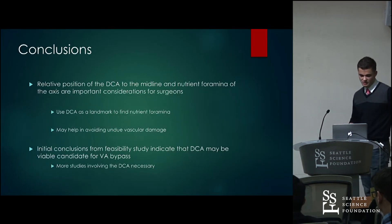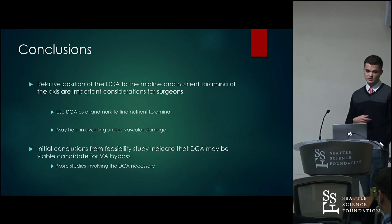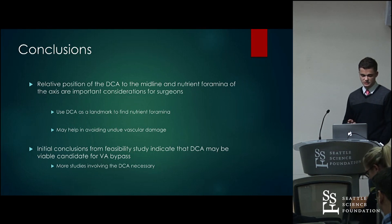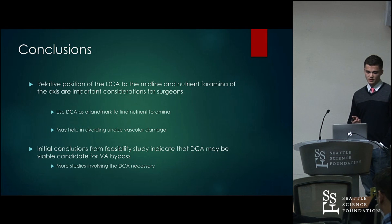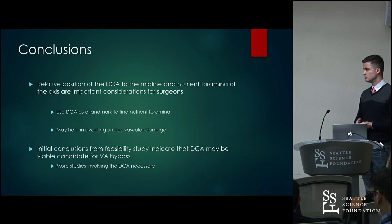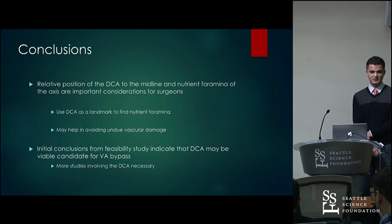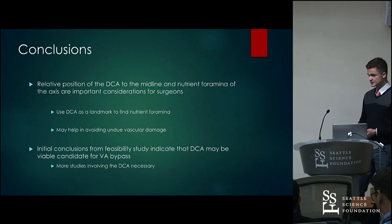Wrapping up and giving some conclusions from the two parts of the study: we measured the relative position of the deep cervical artery to the midline and the nutrient foramen of the axis, and these are important considerations for surgeons for a couple of reasons. First, it would help surgeons to potentially use the deep cervical artery as a landmark to find the nutrient foramen, if they choose to use it as an anatomical landmark for C2 pedicle screw placement. Secondly, it may help in avoiding neurovascular damage during surgery. For the second part of the study, our initial conclusions indicate that the deep cervical artery may be feasibly used in a vertebral artery bypass, but we need more information, specifically on blood flow. These studies are still in progress.